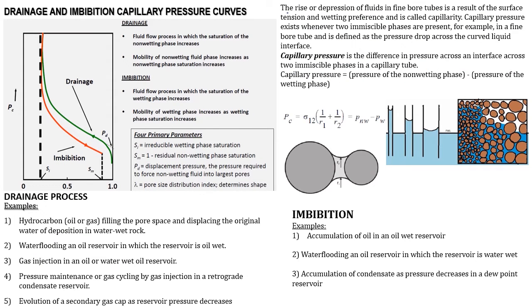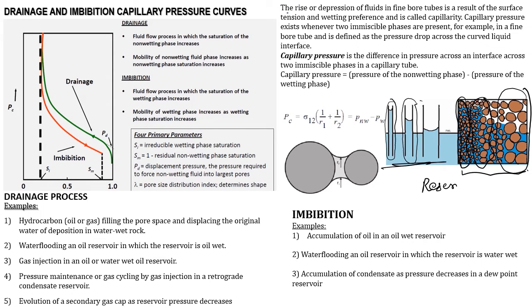The reservoir is a bundle of capillaries. When having small pores, capillary forces would be very high. When having larger pore sizes, capillary forces are very low. So small pore sizes lead to high capillary forces compared to large pore sizes. The main aim is to increase capillary number so that I get low residual oil saturation in the reservoir.